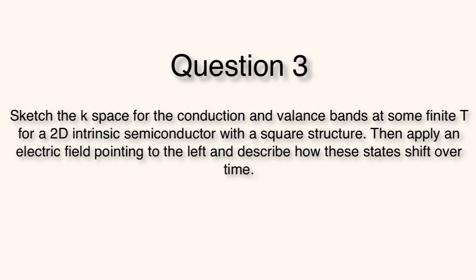And finally, consider a 2D intrinsic semiconductor with a square lattice. Sketch the k-space for the conduction and valence bands at some finite T. Then apply an E field pointing to the left and describe how these states shift over time.